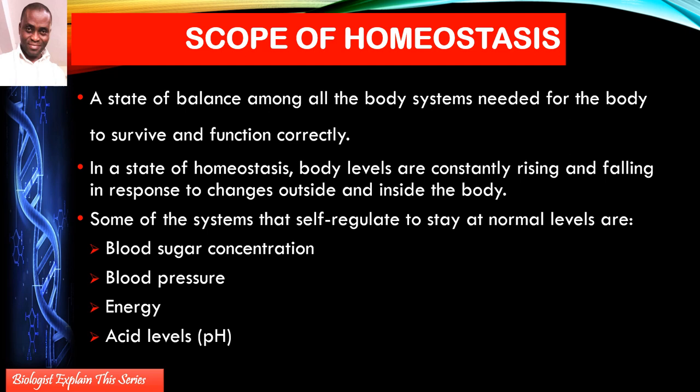after digestion, sugar is absorbed from the ileum of the small intestine across the wall — through the villi, those folds that increase the surface area of absorption — and glucose is absorbed into the hepatic portal vein, transported first to the liver and then to other parts of the body. So there is a need to consider this balance.